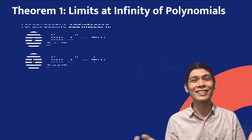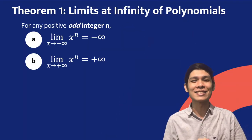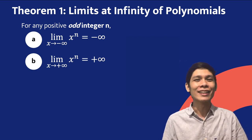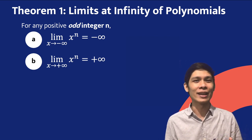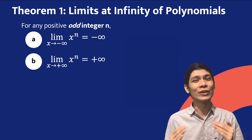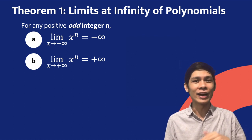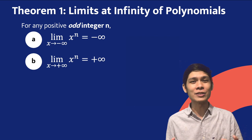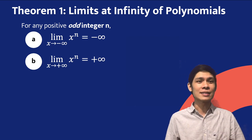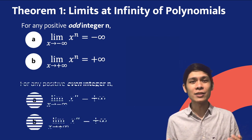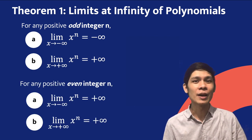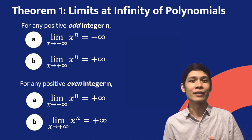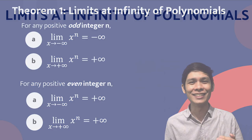Let's get started. Theorem number 1 states that for any positive odd integer n, the left-hand limit of x raised to n is equal to negative infinity, and the right-hand limit of x raised to n is equal to positive infinity. Whereas, for any positive even integer n, both the left-hand limit and the right-hand limit are equal to positive infinity.